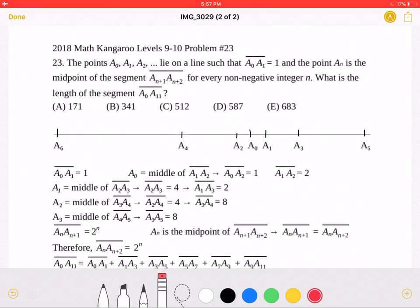So let's start with the fact that segment a0a1 has a length of 1. Now we know from the problem that an is the midpoint of segment an+1, an+2.